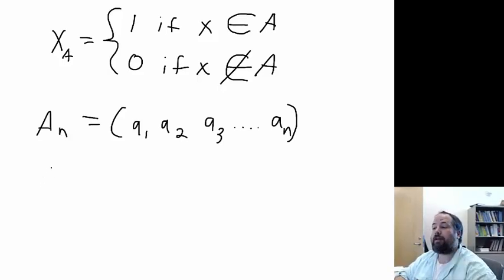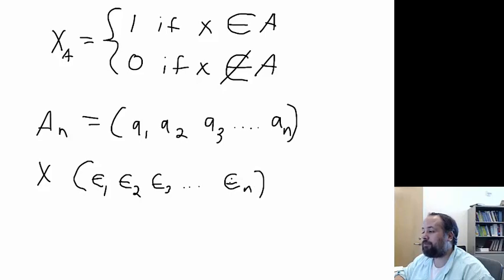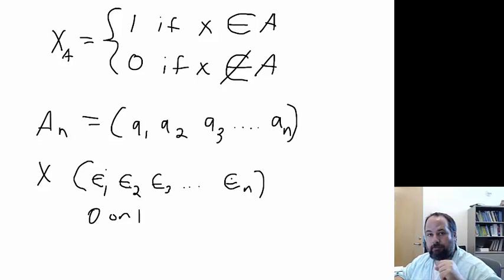So then we can define x as a sequence, and they're using little epsilons. I'm not super good at drawing epsilons, but I'm not super good at drawing anything. Epsilon one, epsilon two, epsilon three, all the way up to epsilon sub n. These are going to be zero or one, depending on whether each element is a member of set A.